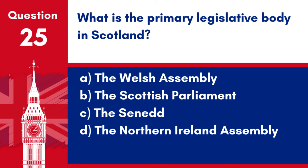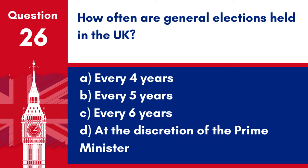Question 25. What is the primary legislative body in Scotland? a. The Welsh Assembly. b. The Scottish Parliament. c. The Senate. d. The Northern Ireland Assembly. Answer: b. The Scottish Parliament. The primary legislative body in Scotland is the Scottish Parliament.